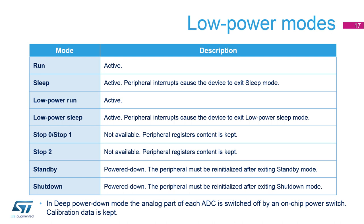In standby or shutdown mode, the ADCs are powered down and must be reinitialized when returning to a higher power state. There is a deep power down mode in each ADC itself which reduces leakage by turning off an on-chip power switch. This is the recommended mode whenever an ADC is not used.